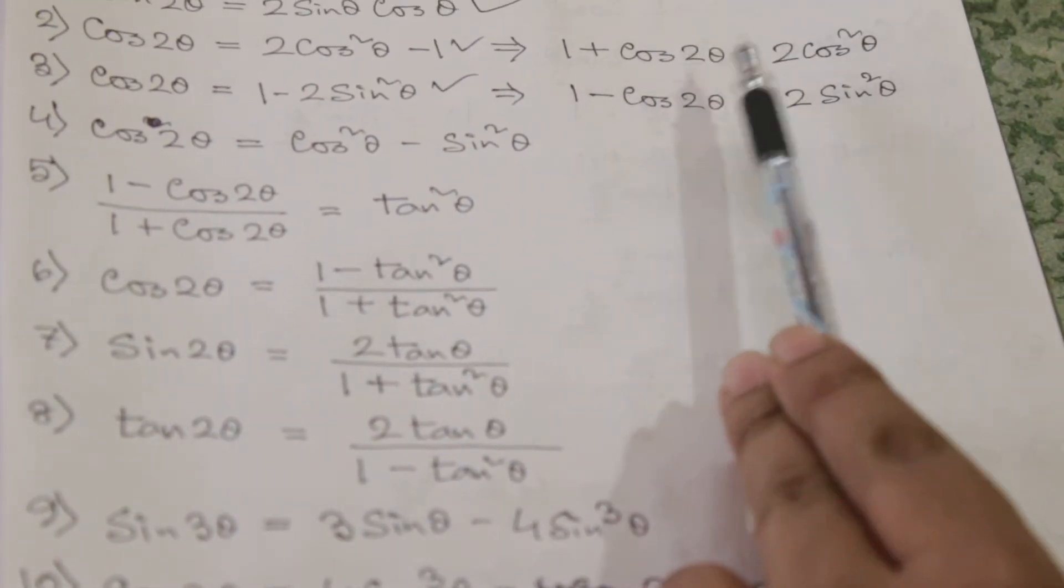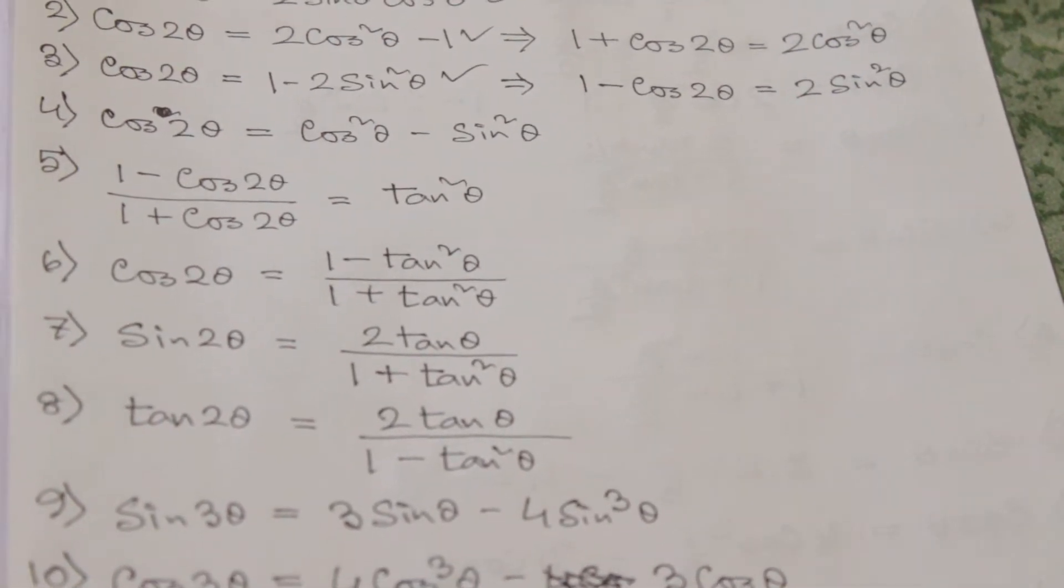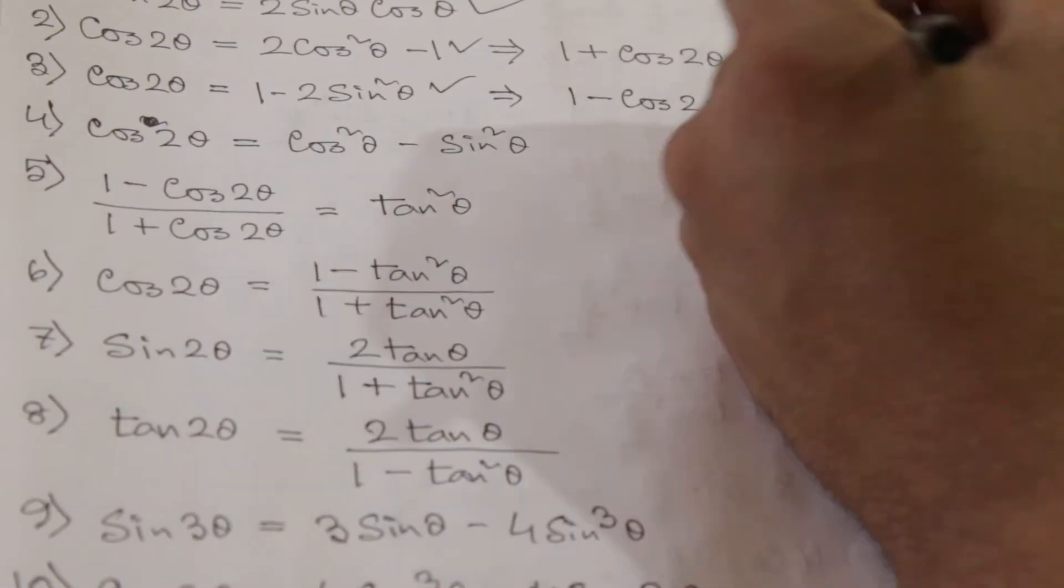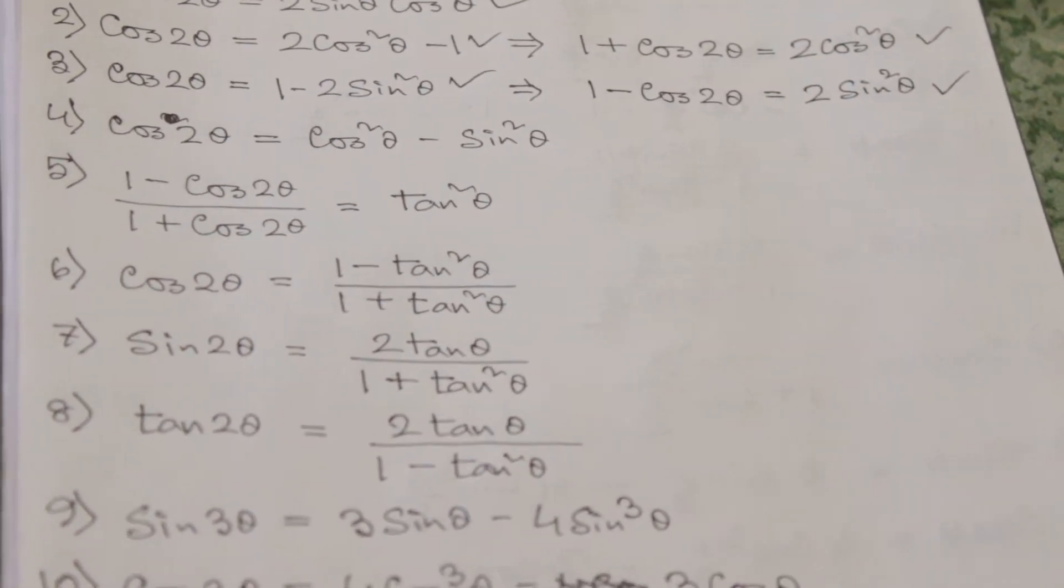From formula number 2 we can also write 1 plus cos 2θ equals 2 cos²θ. And from formula number 3 we can write 1 minus cos 2θ is equal to 2 sin²θ.